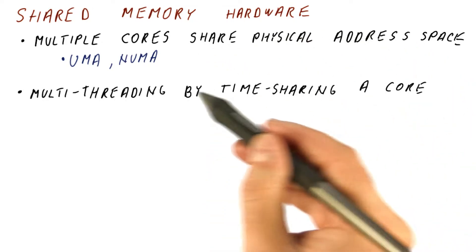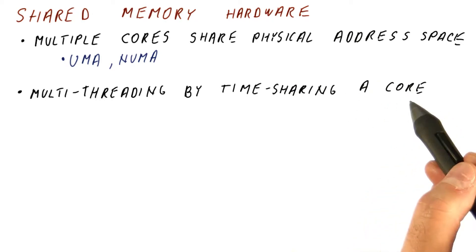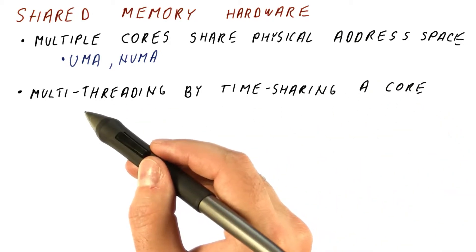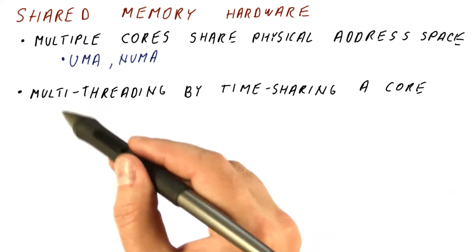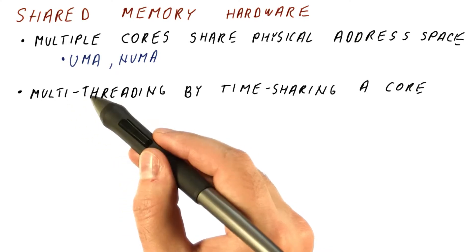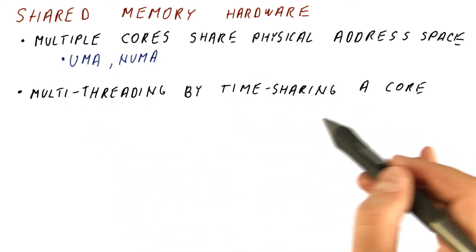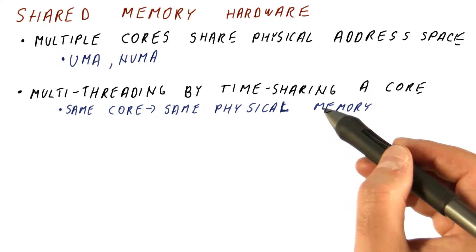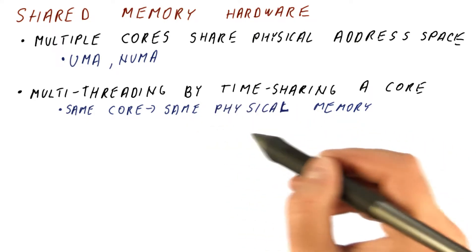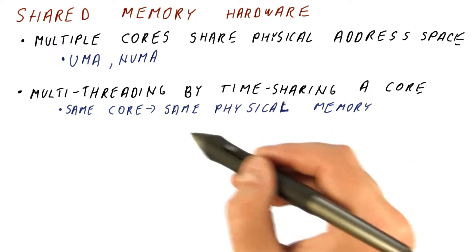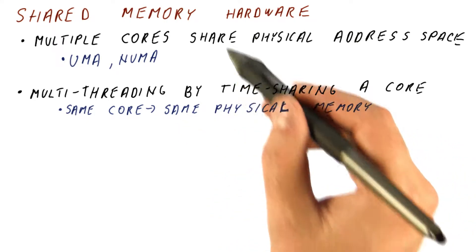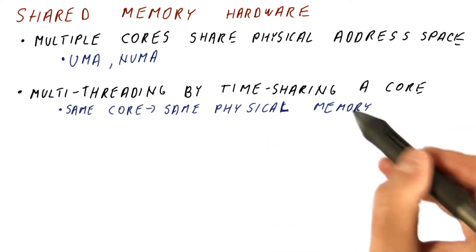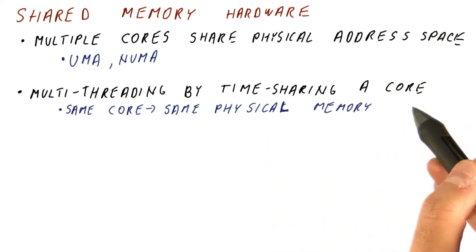The other extreme is to have only one core and then do multi-threading — basically run two threads by time-sharing the same core. Because they are running on the same core, they are naturally accessing the same physical memory. So we get shared memory behavior simply by virtue of not having more than one core.